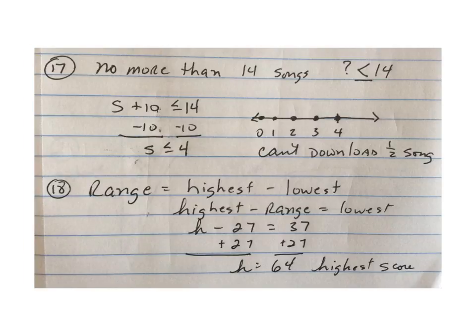On number 17, you can have no more than 14 songs, so something is going to be less than or equal to 14. So the number of songs plus 10, because you've already downloaded 10 songs, is less than or equal to 14. Subtract 10, so you can have less than or equal to 4 songs.